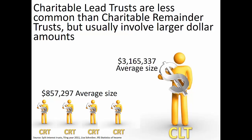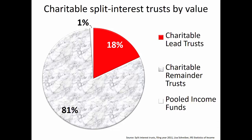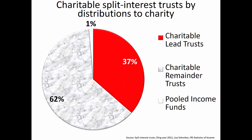Thus, although their numbers are relatively small, when they arise, charitable lead trusts often represent significant wealth. As a result of their larger size, charitable lead trusts hold 18% of all assets amongst split interest charitable trusts, even though they constitute only 6% of such trusts. While charitable lead trusts are less common, they do represent an important segment of charitable planning. For those who represent charities, the most important figure may be the actual dollars transferred to charity — in this category, charitable lead trusts are quite significant, generating 37% of all transfers to charity.